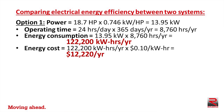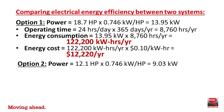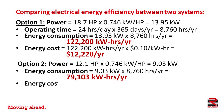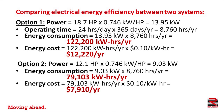In option two, the required power equals 12.1 horsepower. We multiply that by 0.746 to get 9.03 kilowatts, then multiply by 8,760 hours per year to determine that the energy consumption is 79,103 kilowatt hours per year. At 10 cents per kilowatt hour, that equates to an annual electric power cost of $7,910.